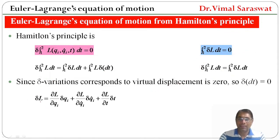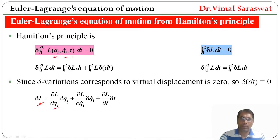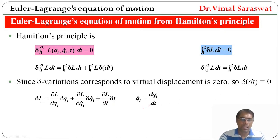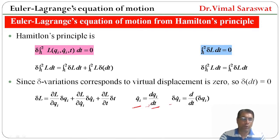Now if we take the delta variation of L — which means we are differentiating L — since L is a function of qi, q̇i, and t, we expand δL. We also use the fact that δq̇i = d/dt(δqi), because q̇i = dqi/dt, so δq̇i equals d/dt of δqi.